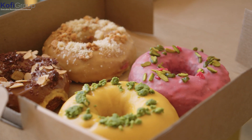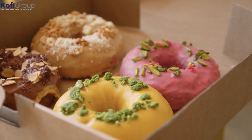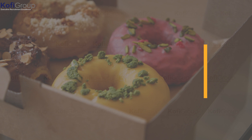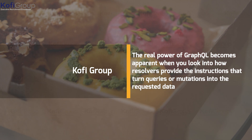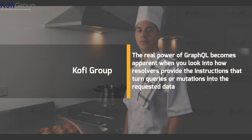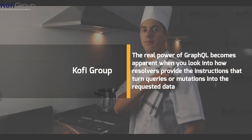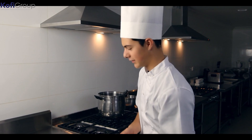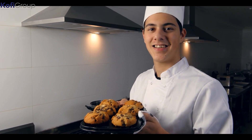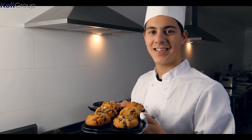Customers can only add toppings defined by the menu or schema — it's not like they can add anchovies on top. The cashier has to verify that the mutation or custom flavor order is possible based on what the menu says the bakery can provide. The real power of GraphQL becomes apparent when you look at how resolvers provide the instructions that turn queries or mutations into the requested data. These are the bakers in our bakery — provided the order checks out against the menu, the bakers will make whatever flavor or variety pastry the app customer wants in a combination box of their choosing.